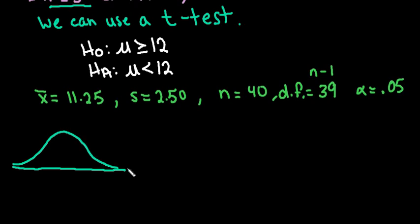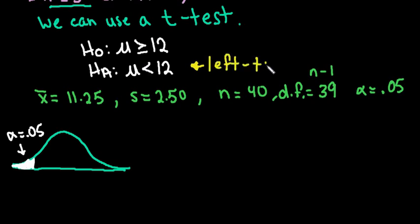I'm going to draw out my distribution — this is a t-distribution, which looks like a normal bell-shaped curve. We're going to shade alpha in the left tail. The reason it's a left-tail test is that the alternative hypothesis always determines the tail. Since the alternative is 'less than,' that tells us it's a left-tail test. If it were 'greater than,' it would be right-tail, and if it's 'not equal to,' it's a two-tail test. We'll use our t-table to find our critical value — some textbooks call it t-sub-c, t-star, or t-naught.